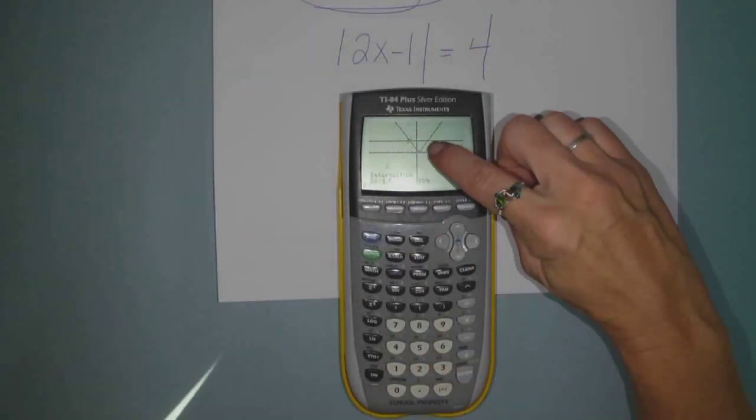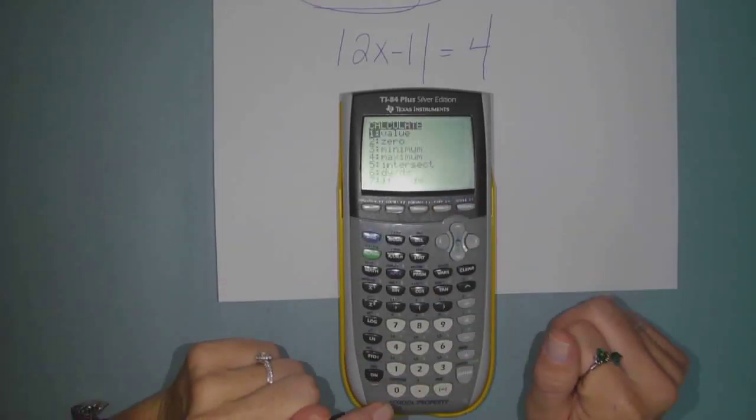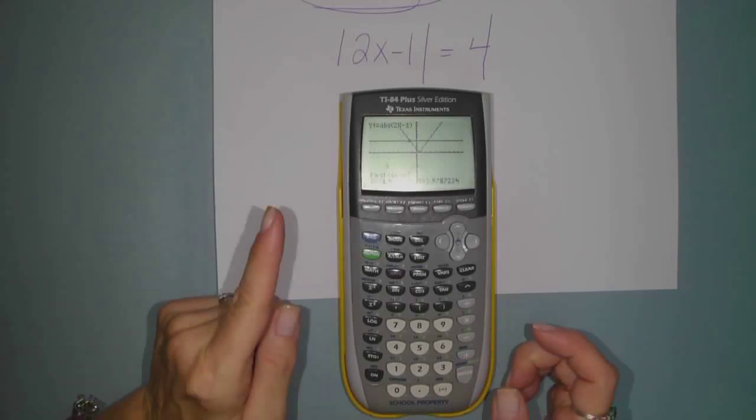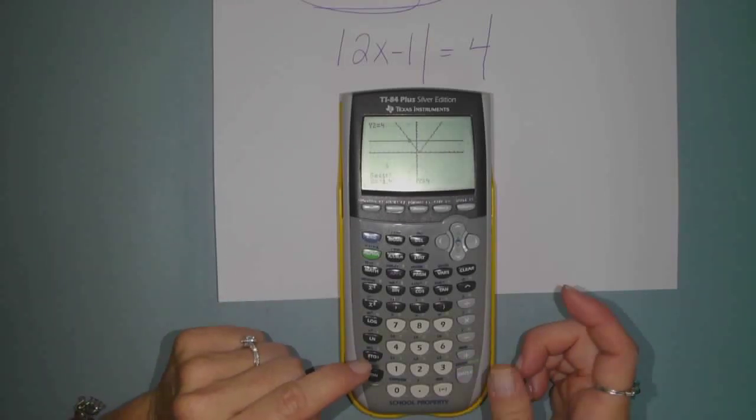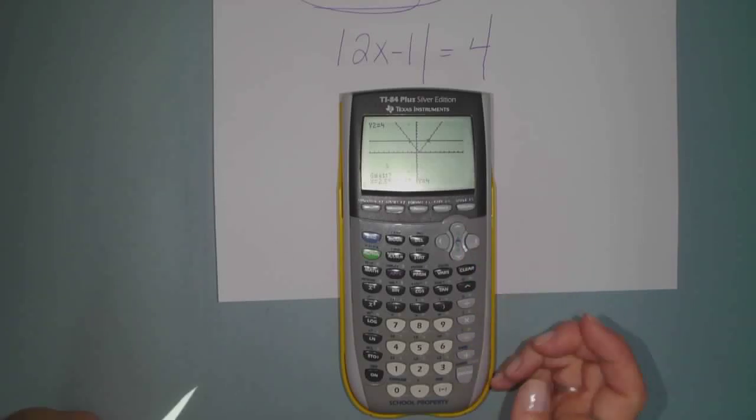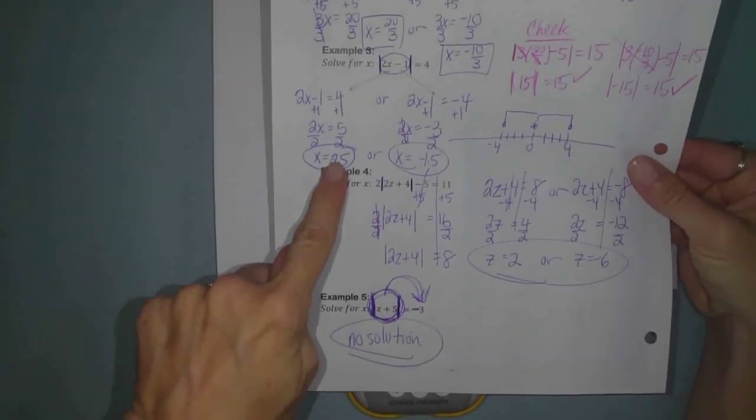Now you got to go through it all over again to get the other one. So now you're going to hit second trace again. Intersect. First curve. Yep. Second curve. Yep. It's the guess you have to change. Arrow to the right. Come over here. Plop it down on top of where you think they intersect. Hit enter. 2.5. Ta-da.